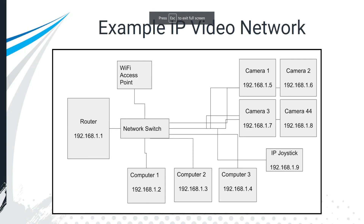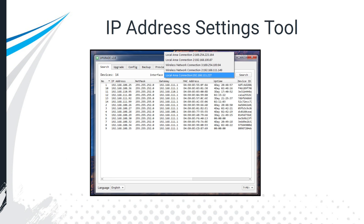At a high level, here's another example video network: a router with the first IP address, an access point, a network switch, multiple cameras, a joystick, and multiple computers — each device has an IP address. That's the takeaway: it's all connected.